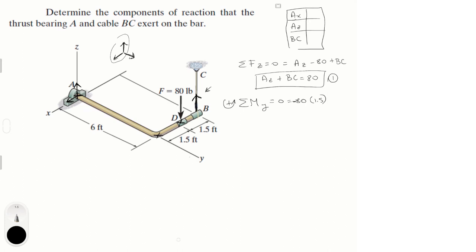Now BC times 3, because that's the distance from here to here, and it's positive because it's trying to turn the Y axis counterclockwise. Now we have only one variable in this equation, which is BC, and we solve for it and we get that BC is equal to 40 pounds.